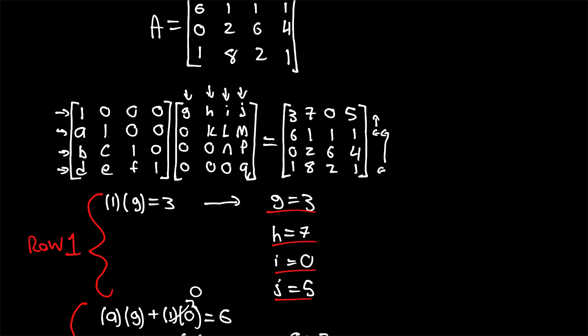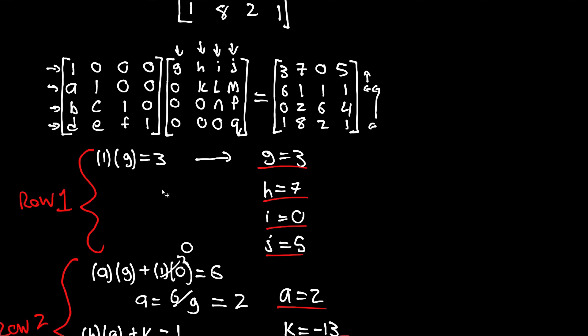And finally, we have the last row here, D, E, F, and known Q, and this final row here, in the output A matrix.